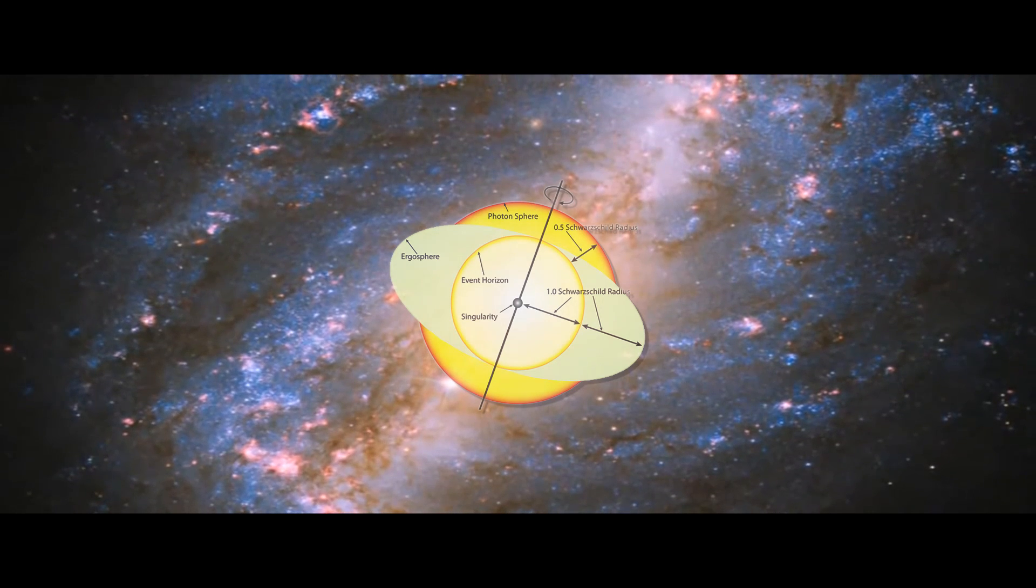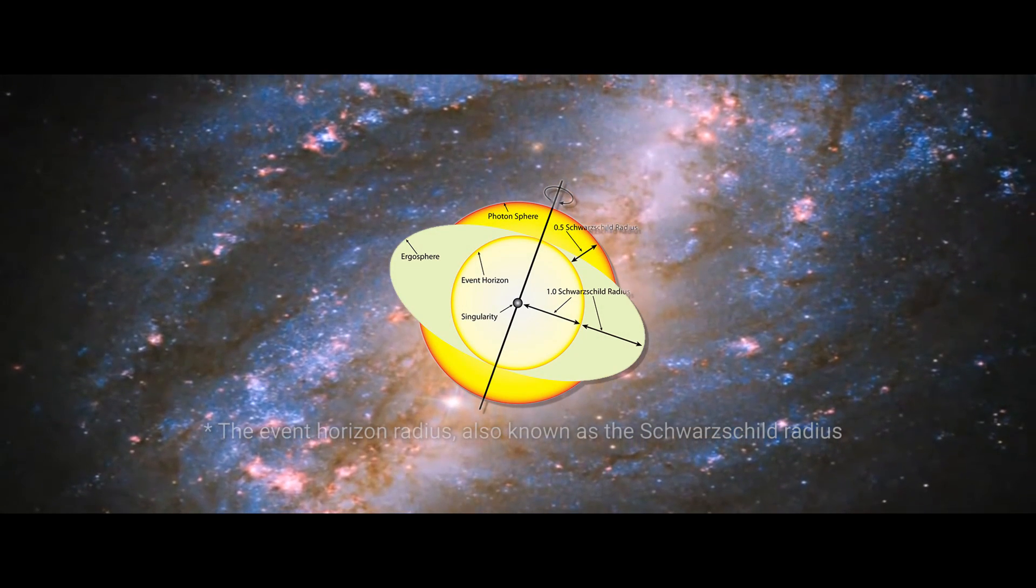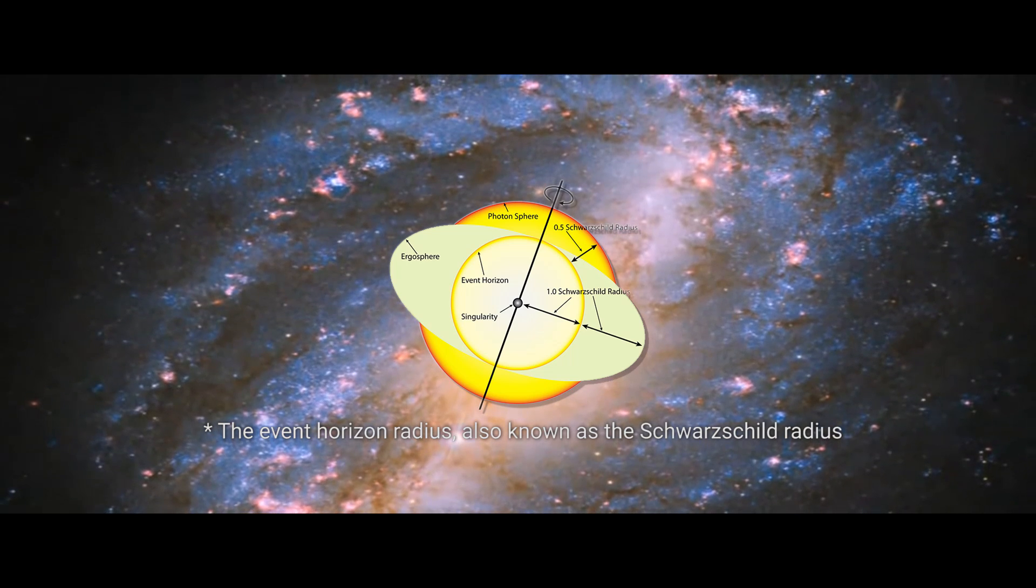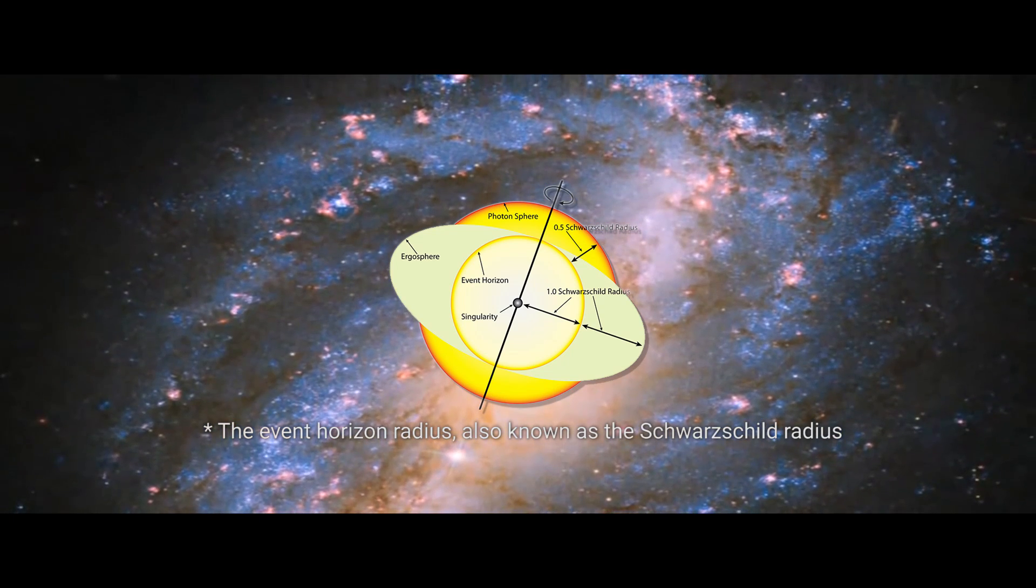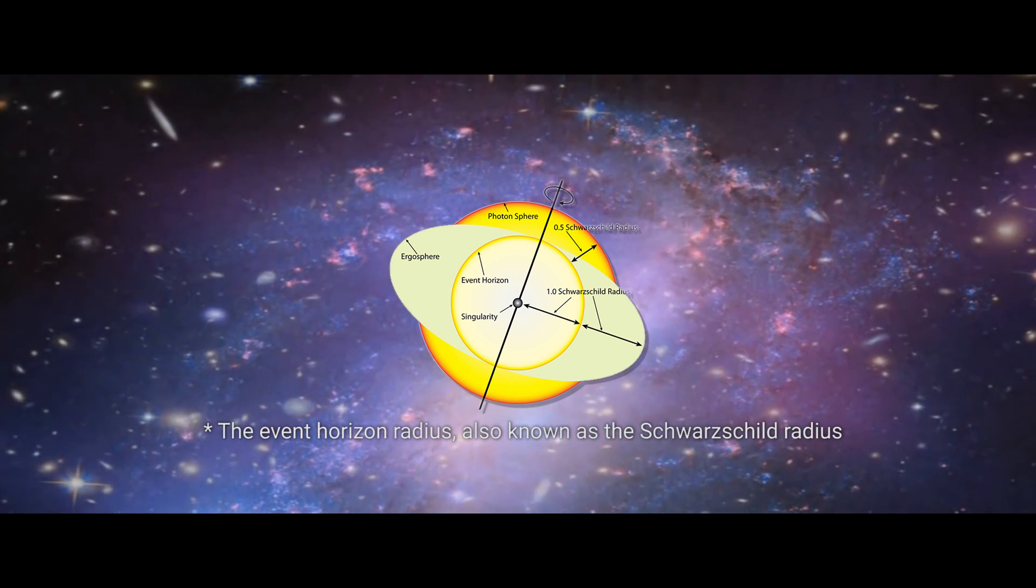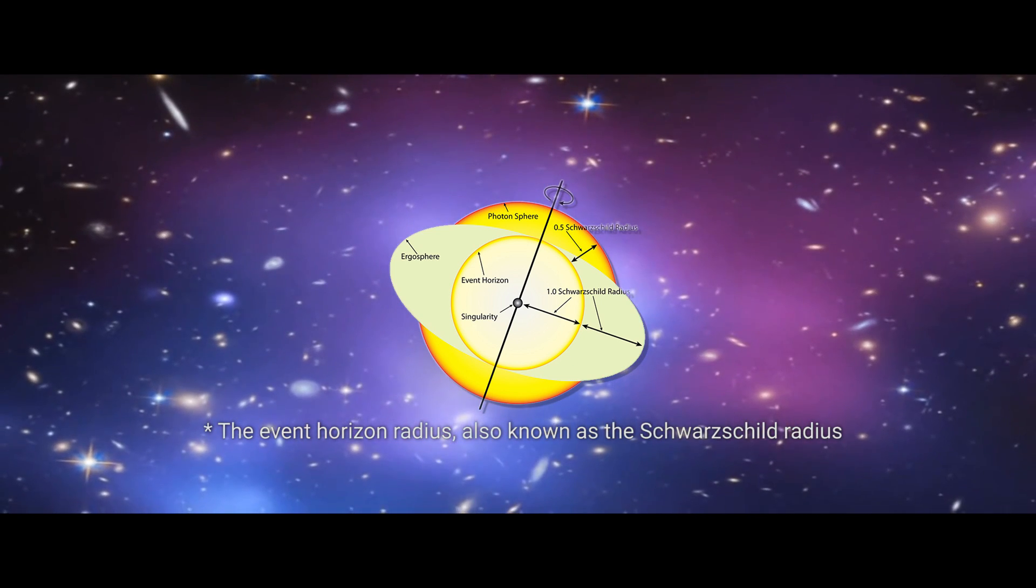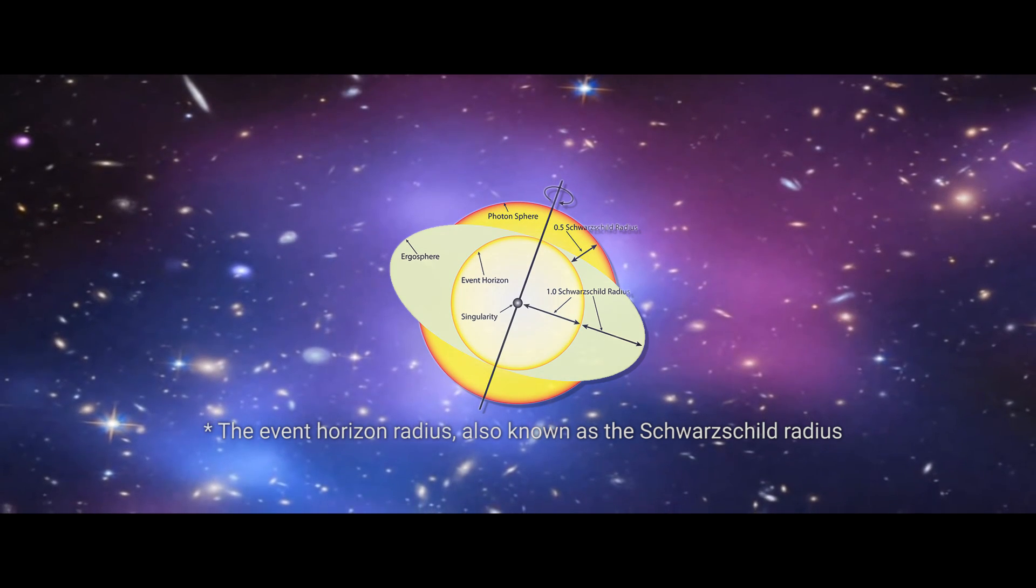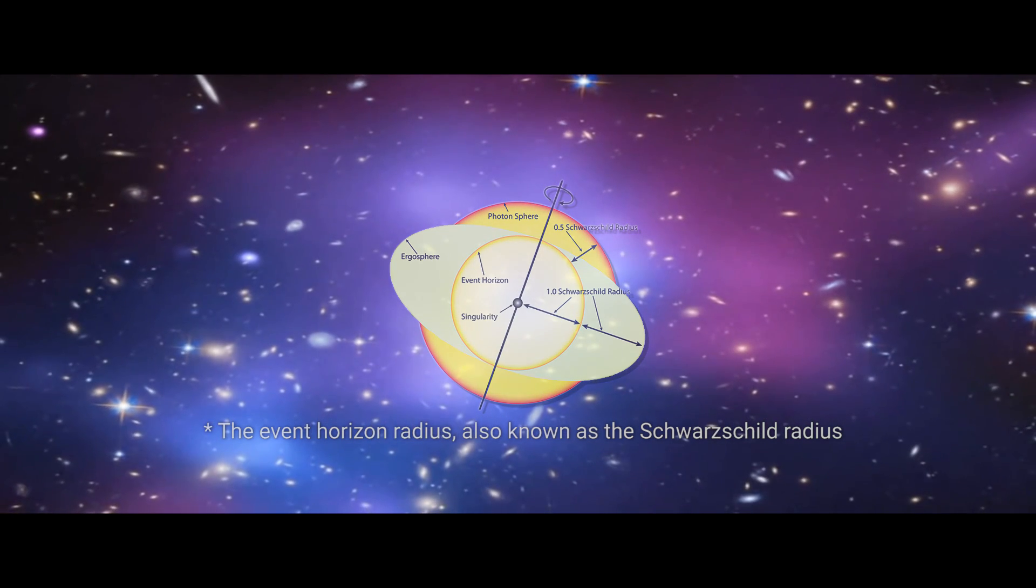First though, the previously mentioned ergosphere is something entirely specific to rotating black holes. Once again, it's not a physical thing, and in this case not quite a border either, even though it sort of has one. But before you can begin to understand how the properties of an ergosphere works, you need to know a few things about rotating black holes.